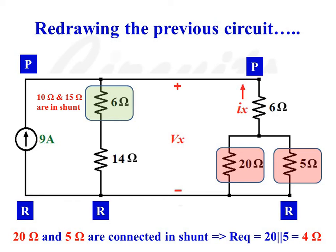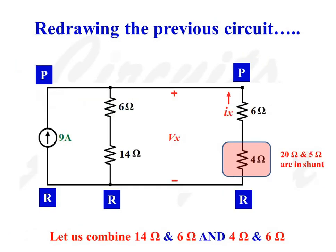Similarly, the resistors shown in the red colored box are also connected in shunt. We can replace the parallel combination of 20 ohms and 5 ohms with a single resistance of 4 ohms. The circuit is now reduced to a network consisting of a single current source and 4 resistors. We can then combine the series combinations: 10 ohms and 6 ohms, and 6 ohms and 6 ohms.